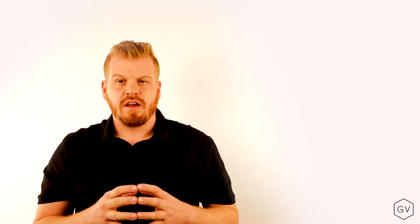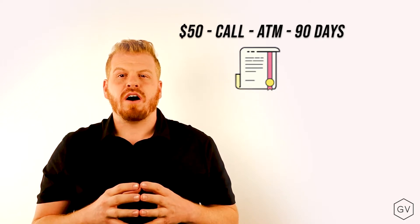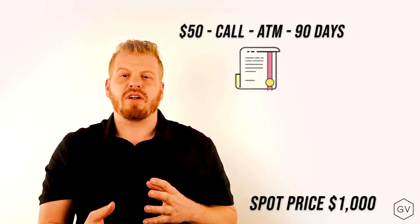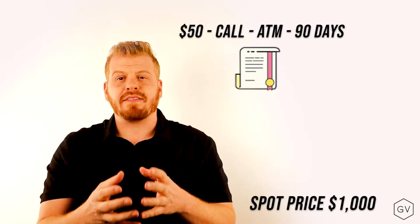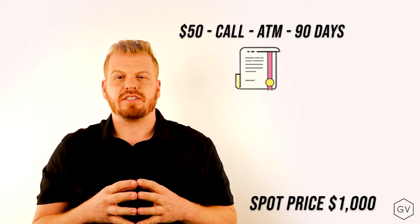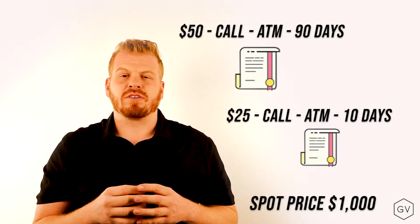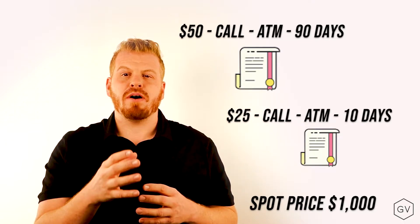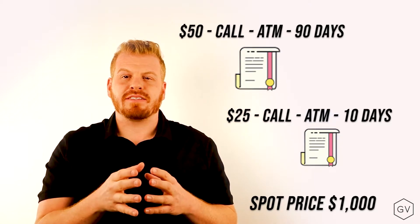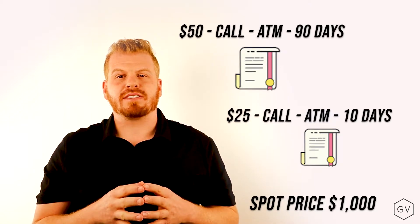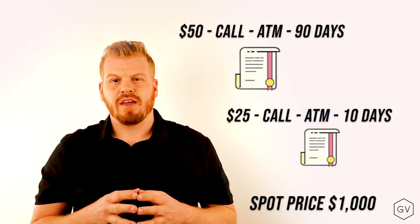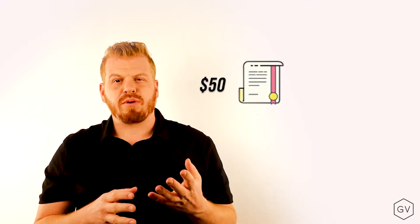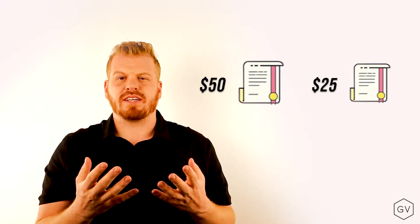Here's the big question: which options are cheap and which ones are expensive? What's more expensive — a $50 call on a $1,000 underlying that's at the money expiring in 90 days, or a $25 call on that same underlying with the same at-the-money strike price expiring in 10 days? What's more expensive, the $50 price tag or the $25 price tag?